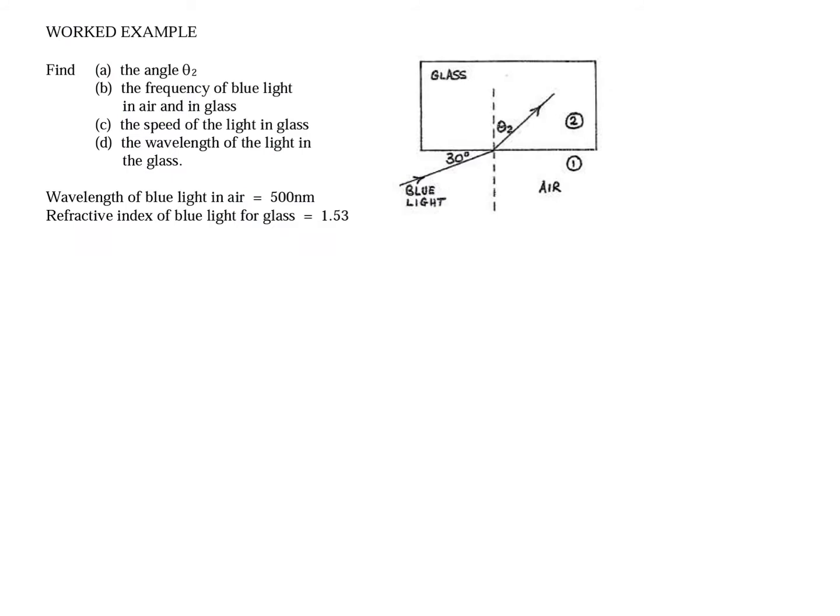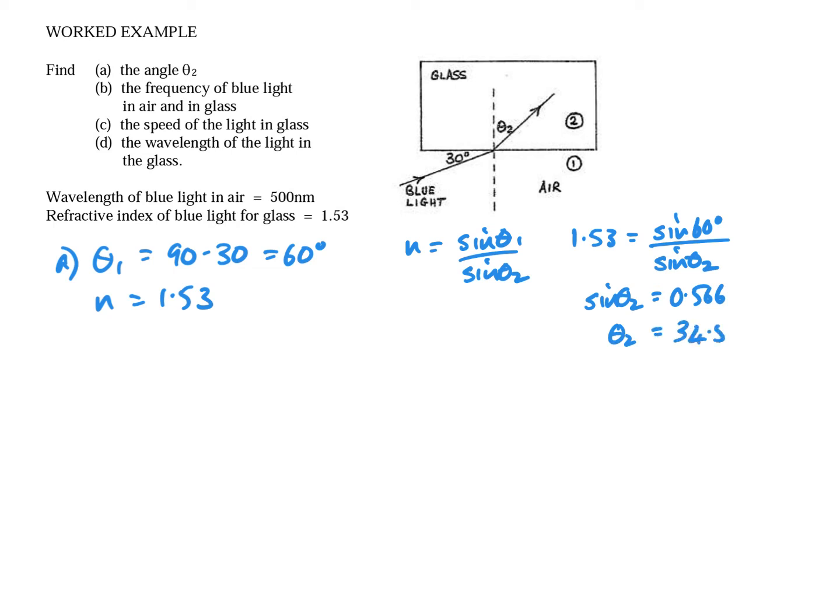So for part a, we know that the angle theta 1, once again we've got to subtract it from 90, theta 1 is 60 degrees and we're told that n is 1.53. So our formula again, and then plugging in, and then we rearrange to get sine theta 2 equals sine 60 divided by 1.53, and then inverse sine gives you theta 2.